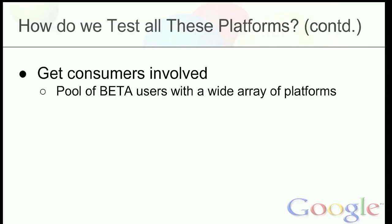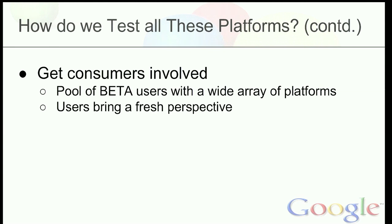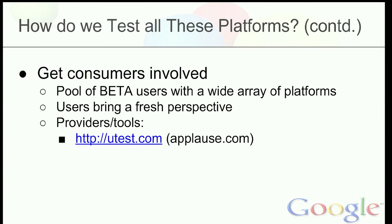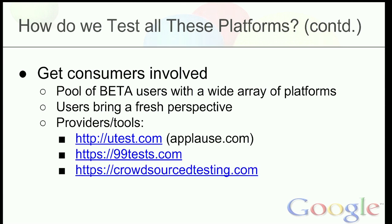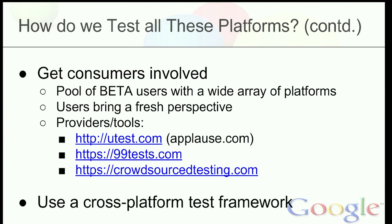There are a lot of devices out there, but who has these devices? Users. So can you get your consumers involved? This is the idea of having a pool of beta testers with a varied set of devices who help you test. Beta testers bring a fresh perspective to your app and help you find bugs you did not anticipate. There are a bunch of tools to recruit these users. You also want to use a cross-platform test framework, where you write your tests in one place and they run on all different devices and frameworks.